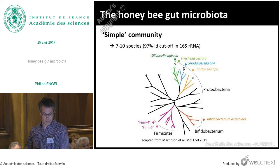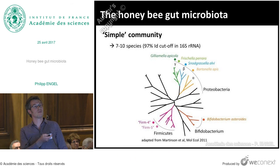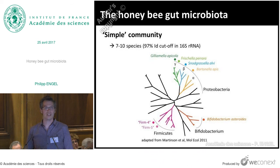So why is this such a great model? The community is fairly simple. It's dominated by seven to eight different bacterial members, and I've highlighted here the seven most abundant members in a schematic phylogenetic tree. We have two gamma-proteobacteria which we call Gilliamella and Frischella, a betaproteobacterium which we call Snodgrassella, one alphaproteobacterium belonging to the genus Bartonella, Bifidobacterium, and two firmicute species groups which actually belong to the lactobacilli.